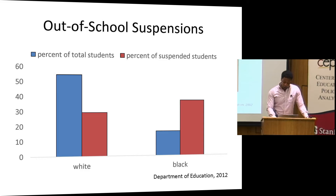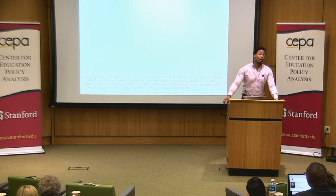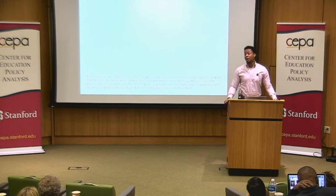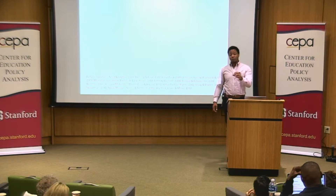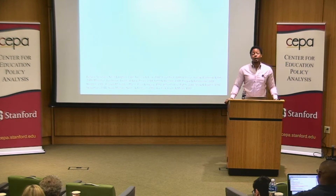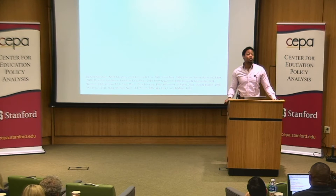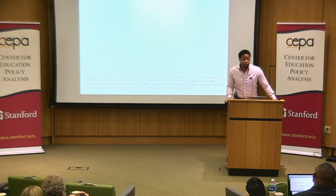I wanted to look at why this might be the case in research I did here at Stanford. A lot of research has looked at this from the perspective of teachers — that teachers are disciplining students differently because they're biased and more inclined to suspend black students. Another body of research looks at the students' perspective and thinks about whether black, Latino, and Native American children behave in a way that gets them into trouble, and therefore we see this disproportionality due to a difference in student behavior. I wanted to look at it experimentally, with the idea that both things may be true as opposed to one or the other.